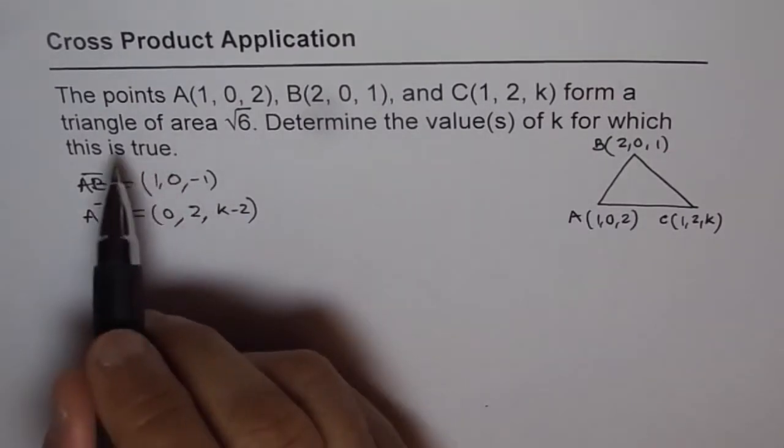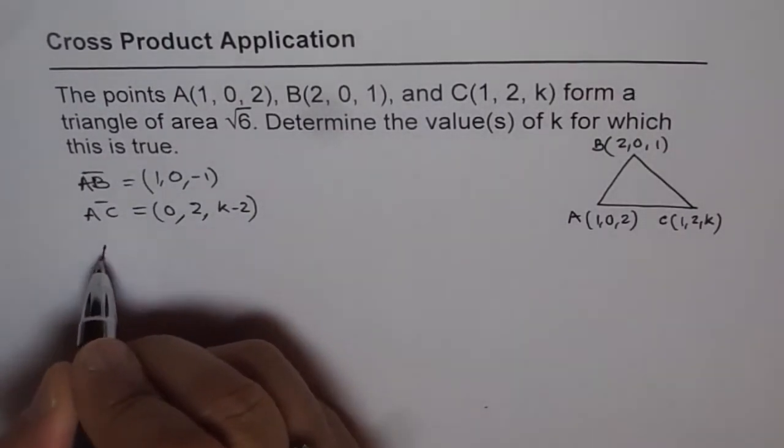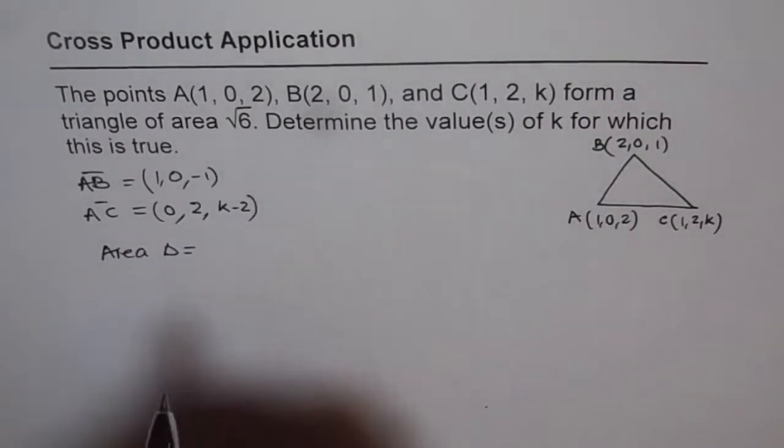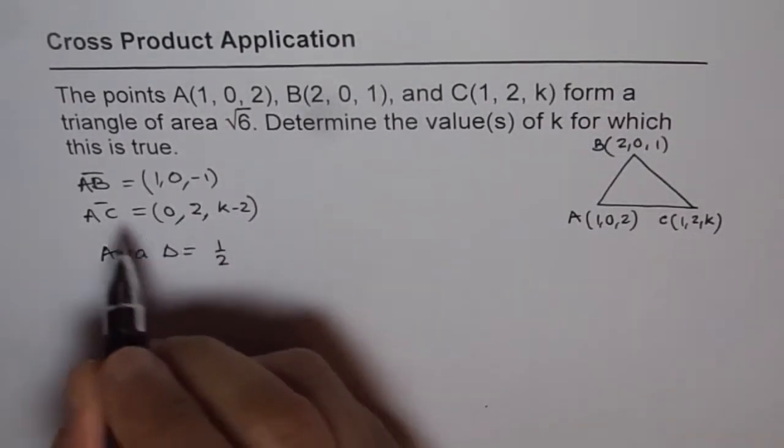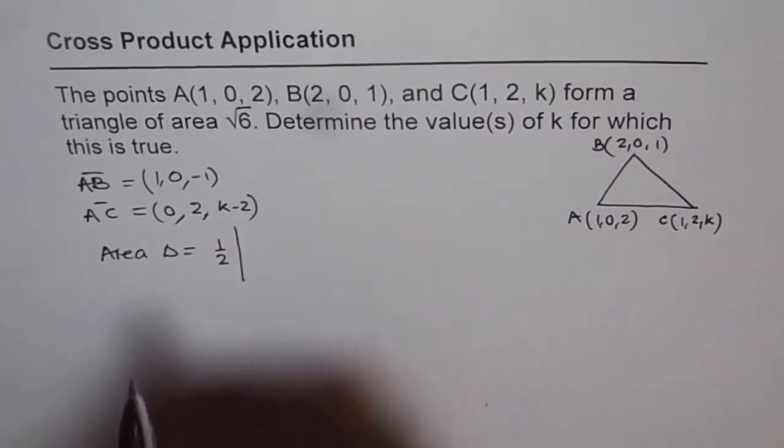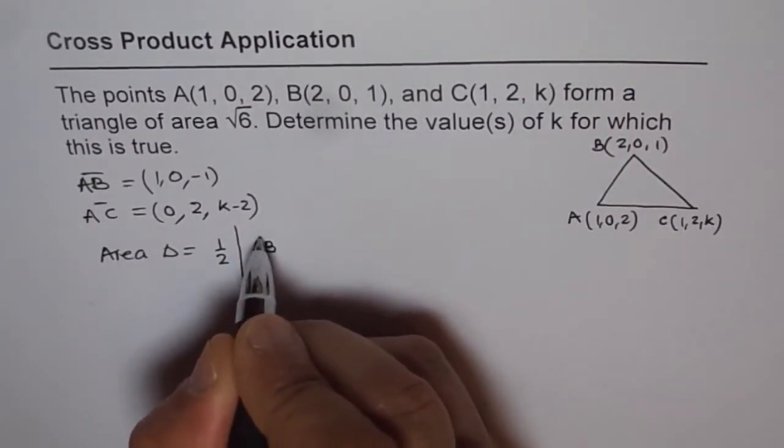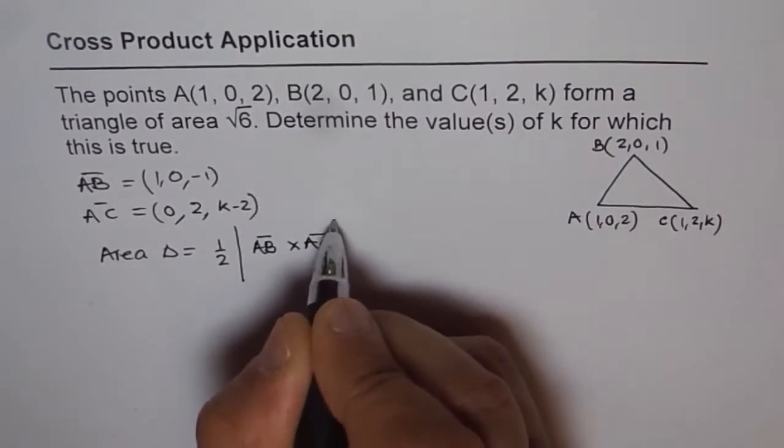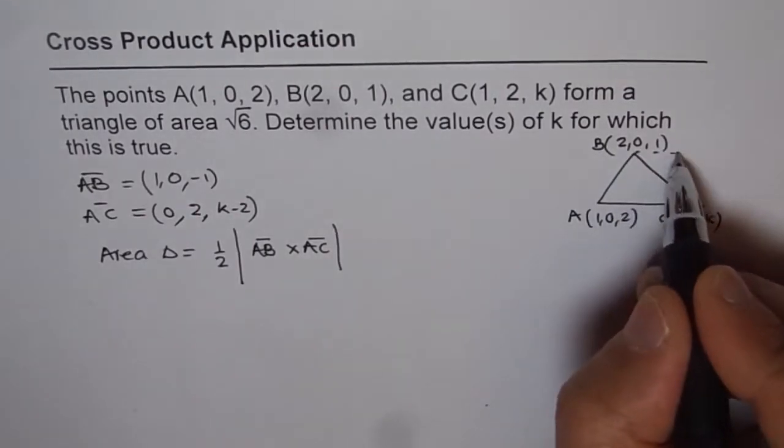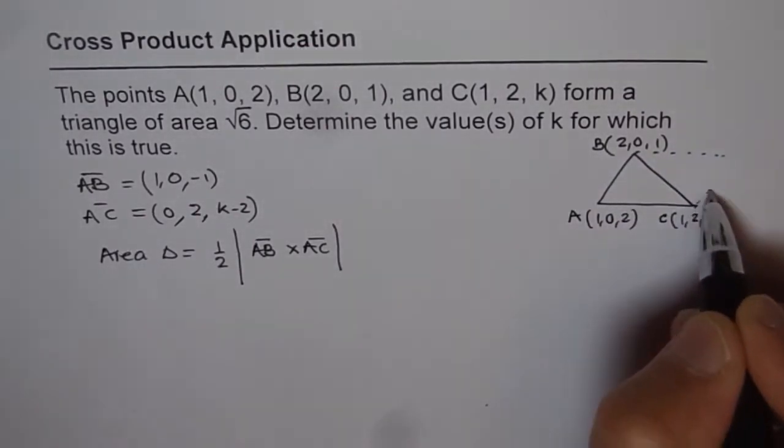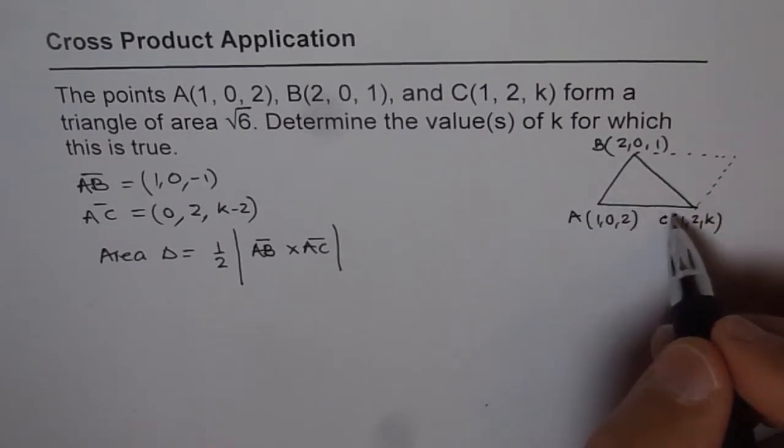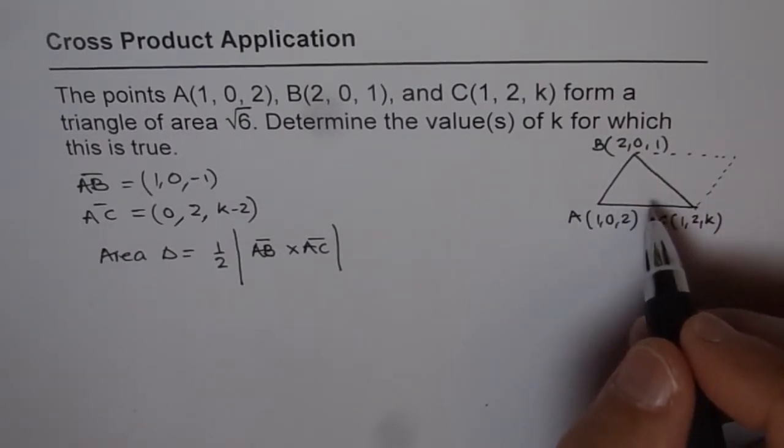What does area of a triangle equal? Area of triangle equals half of the magnitude of AB cross AC. If you do AB cross AC, you get the area of a parallelogram, which is twice the triangle. We are interested in the area of the triangle, which is half of that.